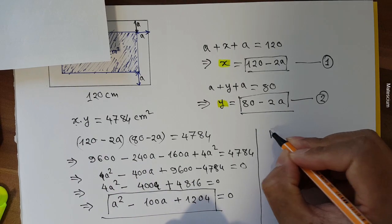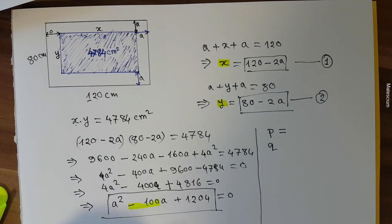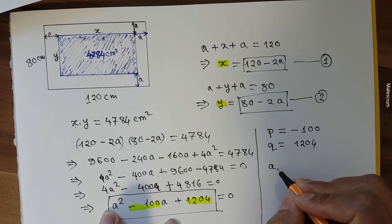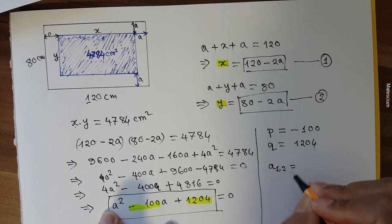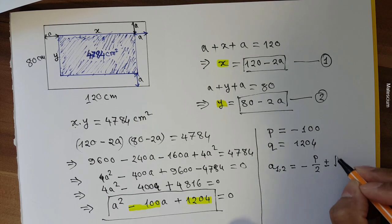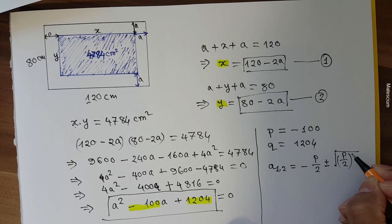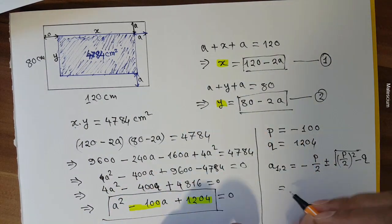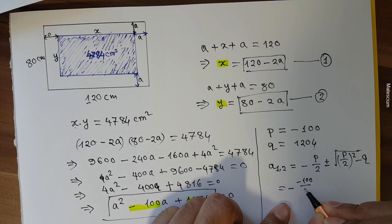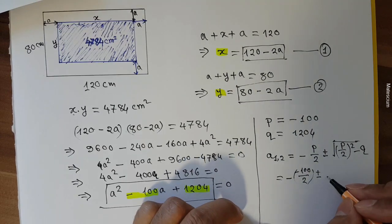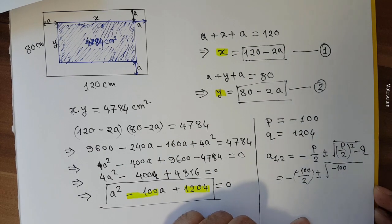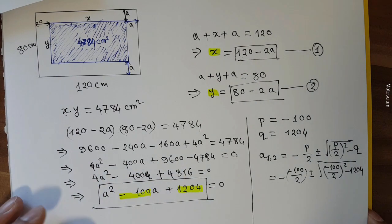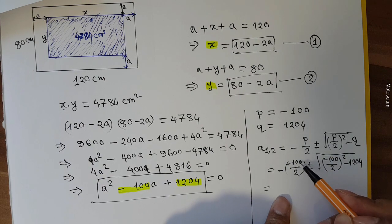In the quadratic equation, the parameters are p and q. Here p equals negative 100 and q equals 1204. There will be two possible solutions. The general quadratic formula is: a equals negative p over 2, plus or minus the square root of (p over 2) squared minus q. Substituting: a equals 50 plus or minus the square root of 50 squared minus 1204.